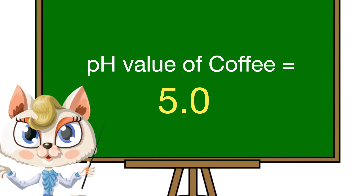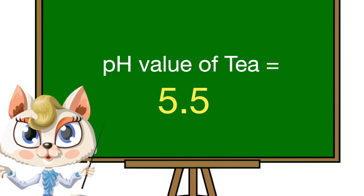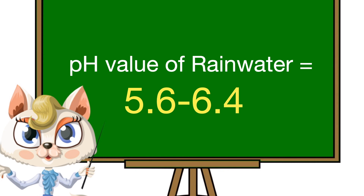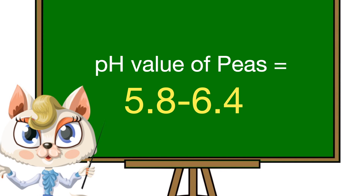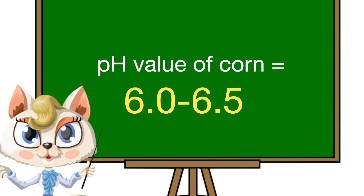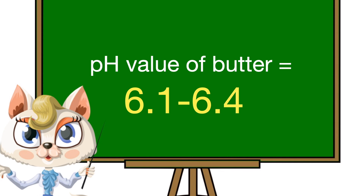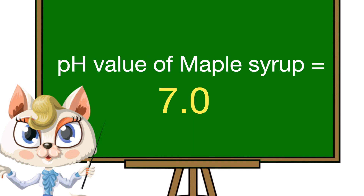The pH value of orange juice is 3.7. The pH value of tomatoes is 4.0 to 4.5. The pH value of coffee is 5.0. The pH value of tea is 5.5. The pH value of rain water is 5.6 to 6.4. The pH value of peas is 5.8 to 6.4.